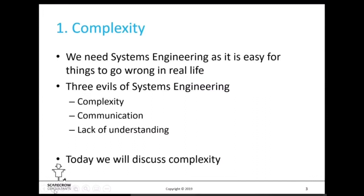Why are we talking about complexity in the first place? Going back further, why do we need systems engineering? In the real world, when working on real projects and interacting with real systems, it's very easy for things to go wrong. If things didn't go wrong we wouldn't really need systems engineering. The reasons things go wrong — I've been referring to these for the last 20 years as the three evils of systems engineering: unmanaged, uncontrolled, unidentified complexity; poor communications; and a lack of understanding.